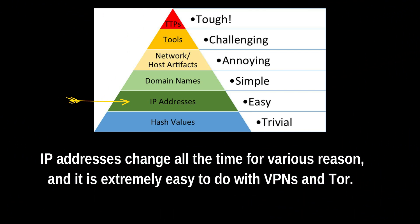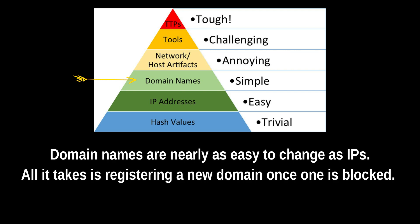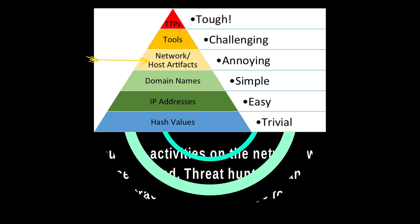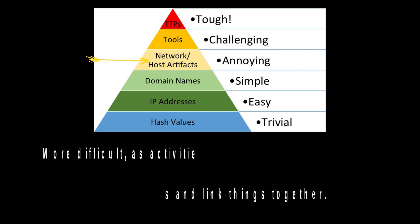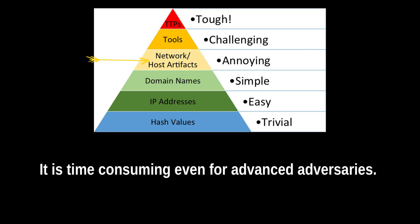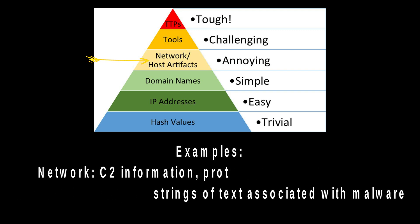Next is IP addresses, which are also common indicators. IP addresses change all the time for various reasons, and it's extremely easy to do with VPNs and Tor. For domain names, it's nearly as easy to change as an IP address — all it takes is registering a new domain once it's blocked. Next is network artifacts and host artifacts. This one's a bit harder, as activities on the network will leave evidence behind. Threat hunters can look for these traces and link things together. Some examples include C2 information in network protocols and URL patterns. Host artifacts could include registry keys or strings of text known to be associated with specific malware.